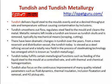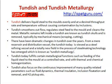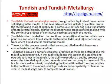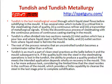Tundish has fulfilled certain metallurgical functions such as fluid dynamics, thermal insulation, inclusion flotation and removal, and hydrogen control. Tundish is the last metal vessel through which the liquid steel flows before solidifying in the mold. It has several roles which include a critical link in the steelmaking chain of quality, a continuous refiner, and a transmitter of metal quality signals. It links the continuous process of steelmaking with the continuous process of continuous casting starting in the mold.